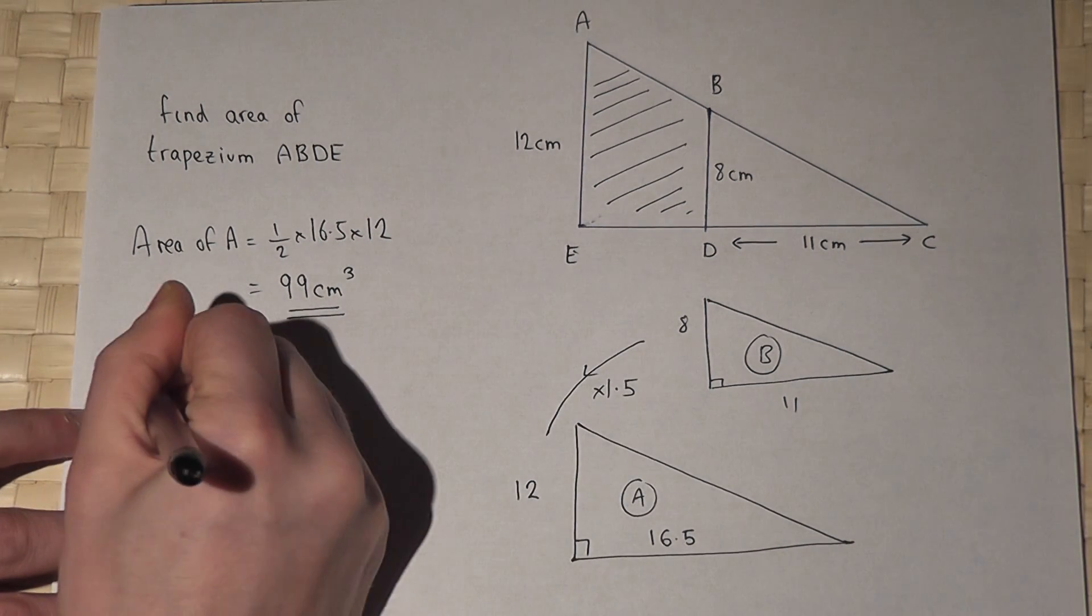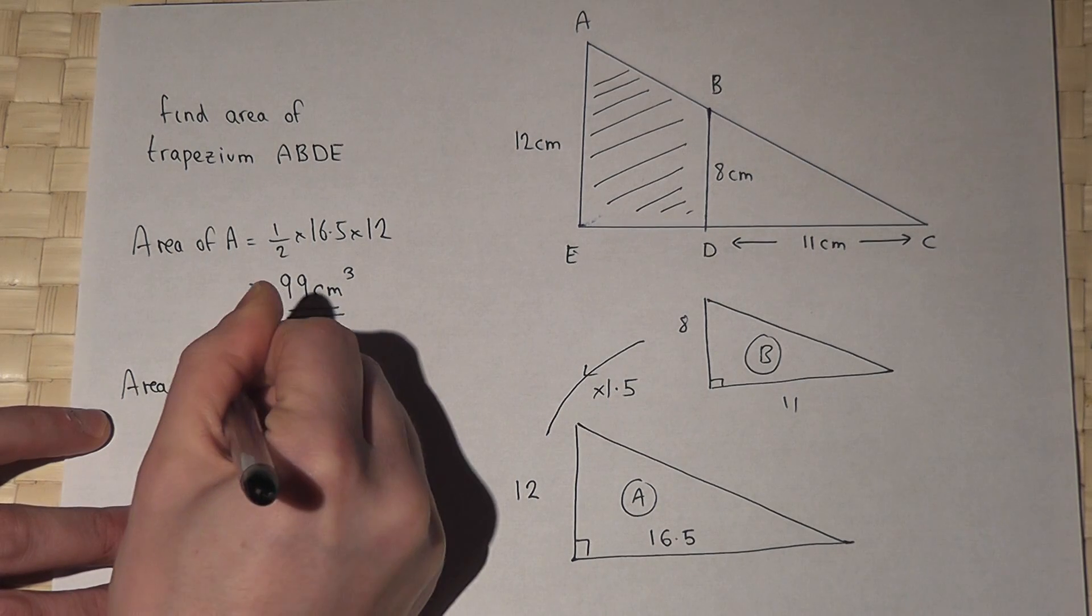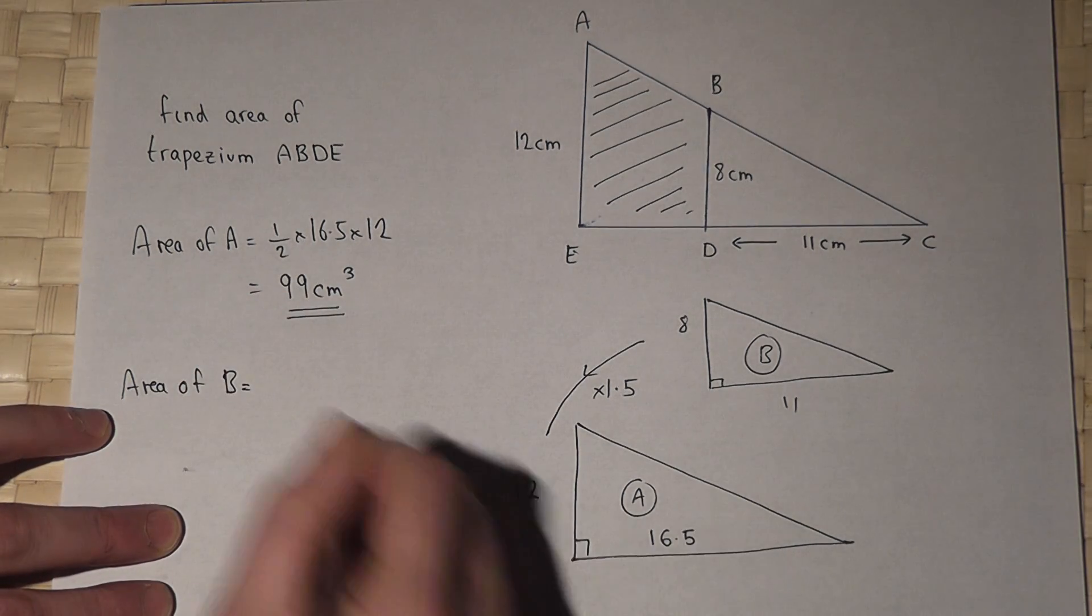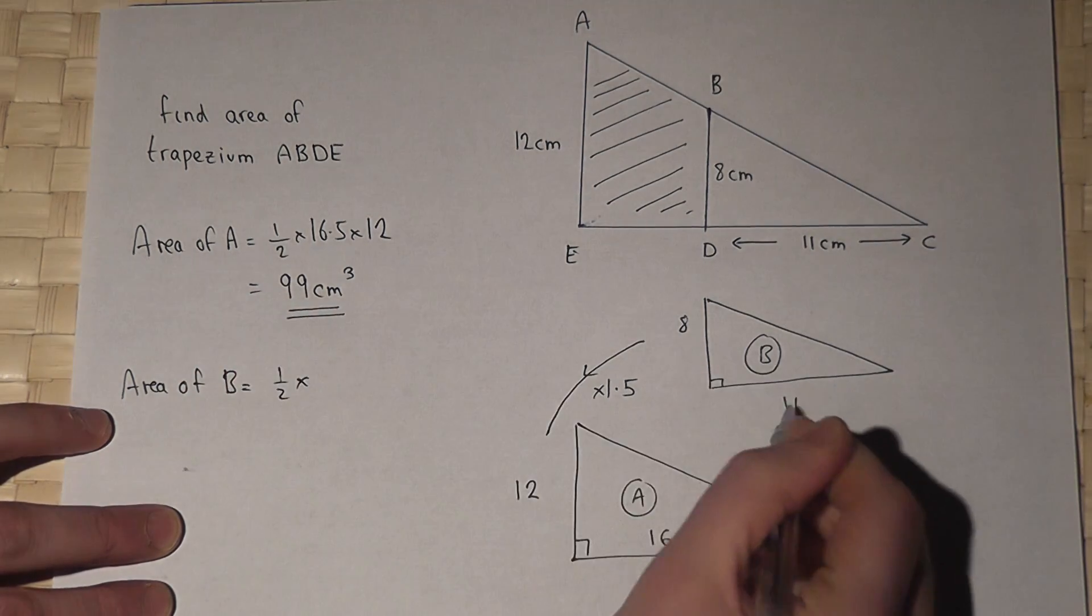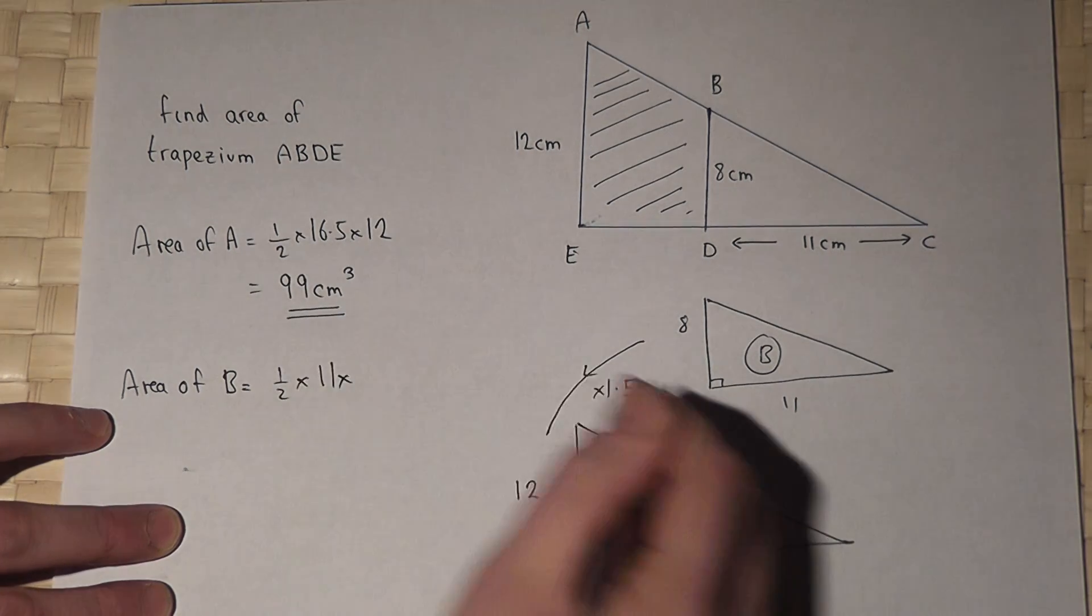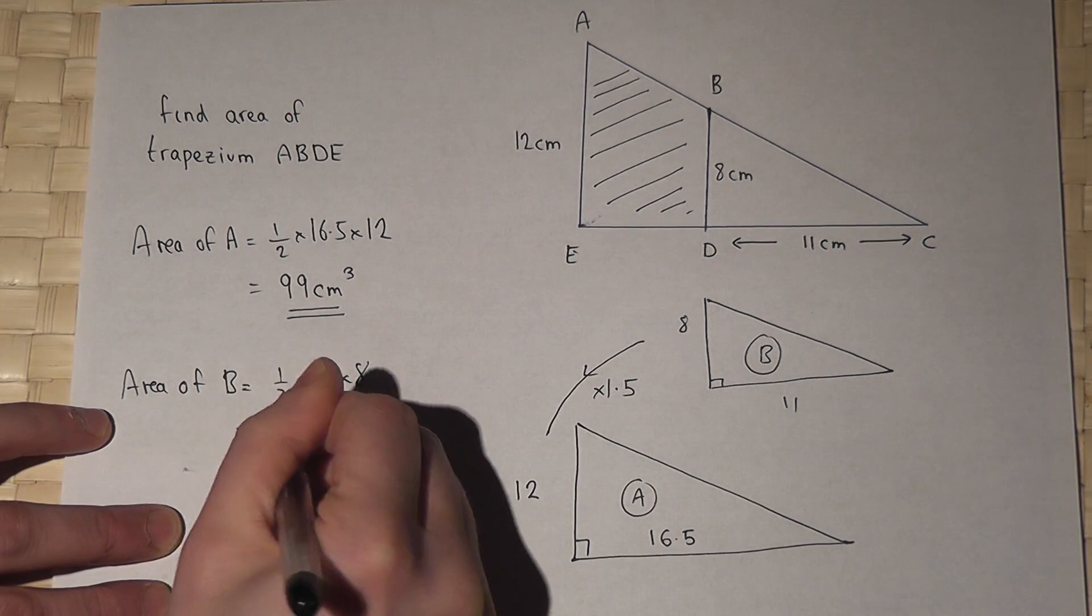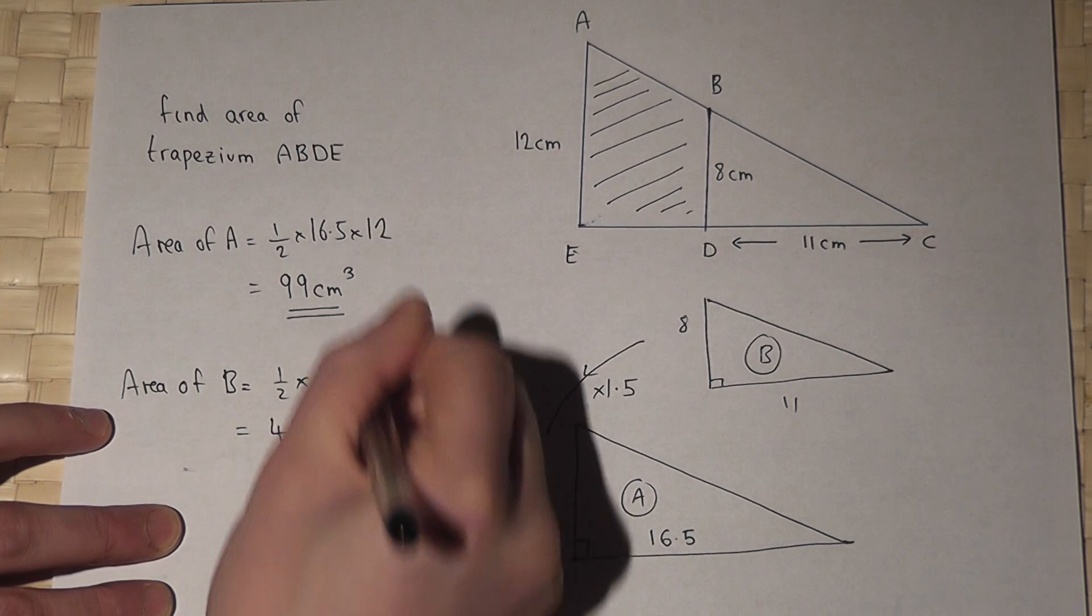The area of B is a half times its base times its height, which is 44 centimeters squared.